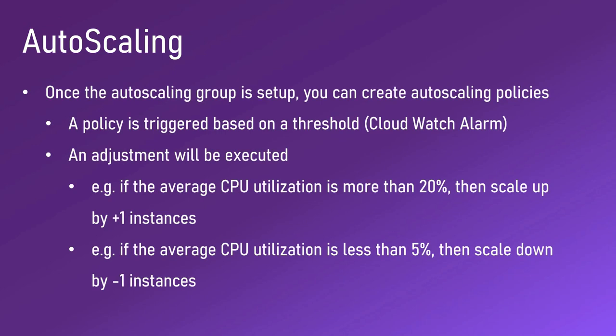Once the auto scaling group is set up, you can create auto scaling policies. A policy is triggered based on a threshold - it is actually a CloudWatch alarm that you set. When that threshold is triggered, it is going to execute an auto scaling policy and an adjustment will be executed. For instance, if the average CPU utilization is more than 20 percent, the CloudWatch alarm is going to be triggered and you are going to see a scale-up event by plus one instance. This plus one is also configurable.